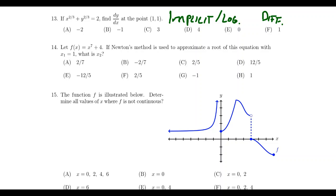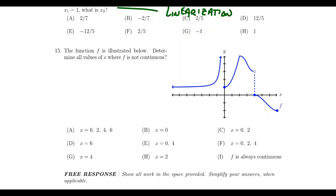Question number 14 is going to be an approximation question of some kind. It could ask you to use Newton's method, or it could also ask you about linearization — which is the baby version of Newton's method. Both of these questions showed up on exam four in the multiple choice section. You'll be asked one or the other on this final exam, and you should be prepared to do both.